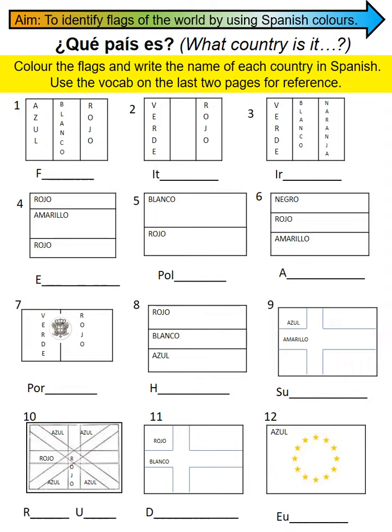Que país es actually means 'what country is it?' So if you look at flag one, the first colour on there is azul, which is blue. The second colour is blanco, which is white. And the third colour is rojo, which is red. Your job is to predict the actual country which the flag belongs to, and so on and so forth.